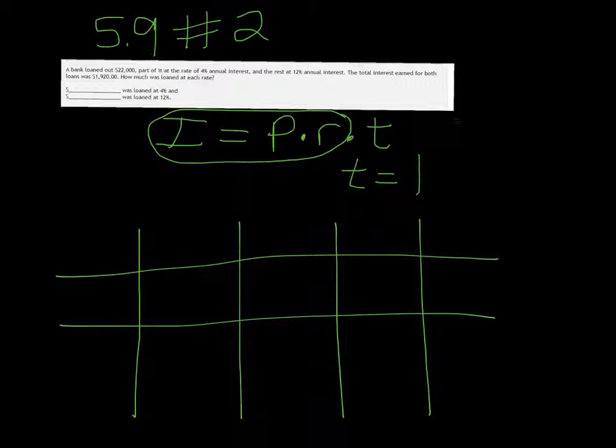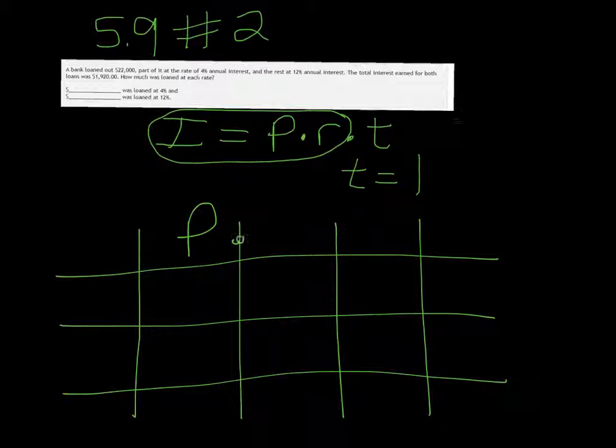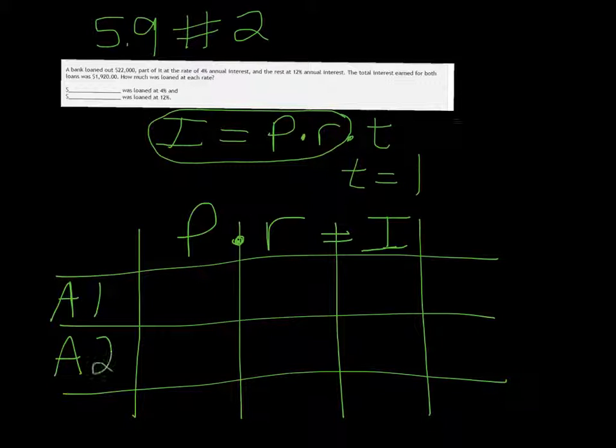All right, so we have our P times our R, and that's going to equal the I. And then we have two accounts, so we'll call it account one and account two. And then you have a total. And then you just start filling it in.